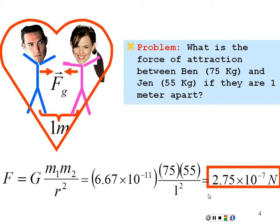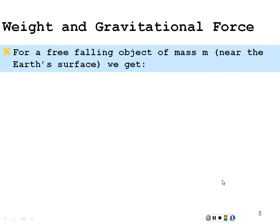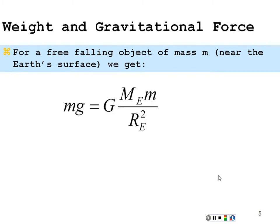2.75 times 10 to the minus 7 newtons — not enough for them to spontaneously collide, because there are other forces involved like air friction and friction on the ground that prevent this really small force from being overwhelming. For a freely falling object of mass M near the earth's surface, your weight mg is equal to the force of attraction between the earth and the mass: G times the mass of the earth times the mass of the object over the radius of the earth squared.